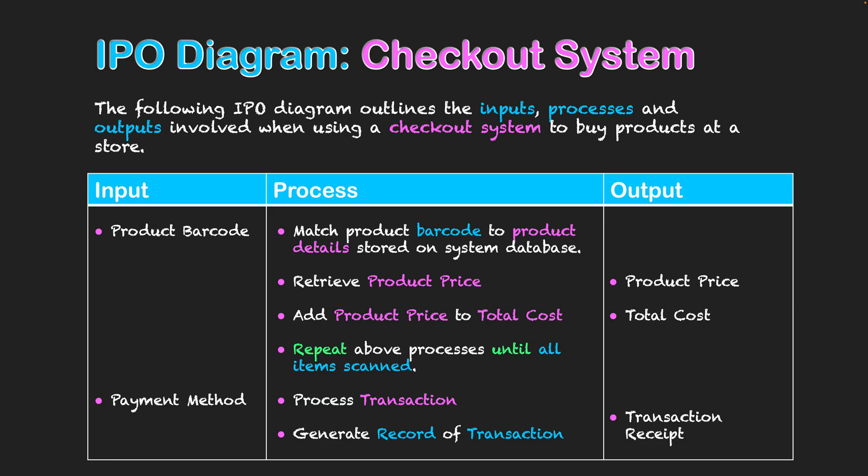Once the transaction is processed, we then generate a record of the transaction, and the output of the system will be a transaction receipt. That is the finalized output of this system, which goes to the customer as their proof of purchase — recording the date, the time, and what products they purchased at what price, for them to keep and refer to if there are any issues in future.